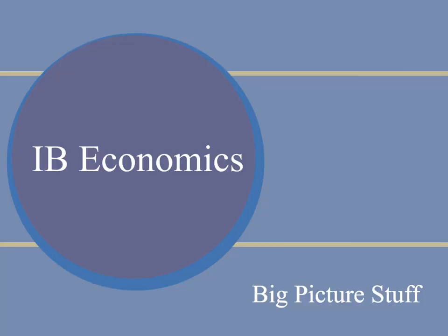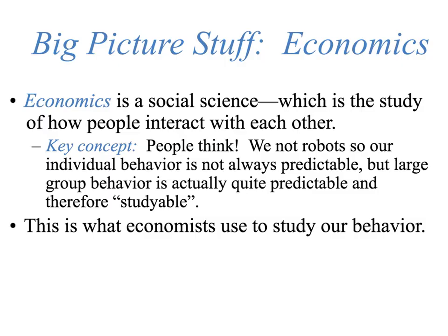So big picture stuff — what is economics? I like to start really big and talk about why it's important. Economics is a social science, which is to say it's the study of how people interact with each other. People aren't robots, so individual behavior is not always predictable. But the interesting thing about economics is that large group behavior is actually quite predictable and therefore studiable. This is what economists do, and it's what you're going to learn to do — study human behavior.